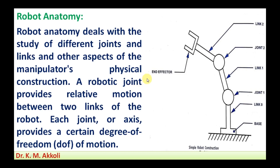Next we will look at robot anatomy. Robot anatomy refers to the study of the different joints and links used in robots and the physical construction of the robot. Robot anatomy deals with the study of the different joints and links and other aspects of the manipulator's physical construction. A robotic joint provides the relative motion between two links of the robot.